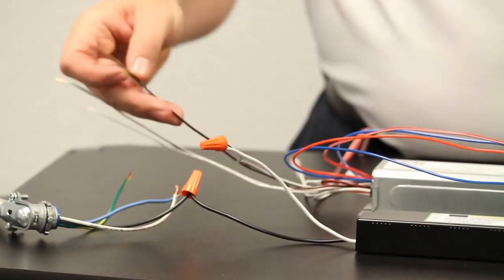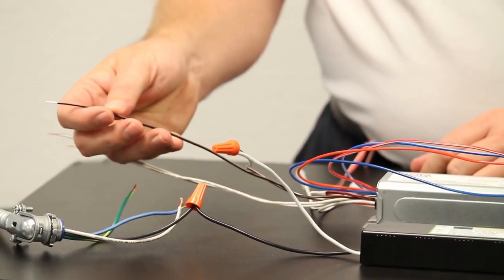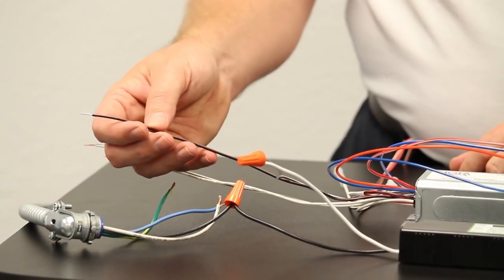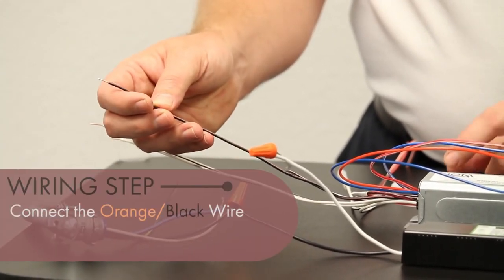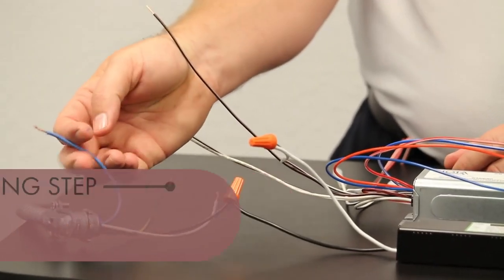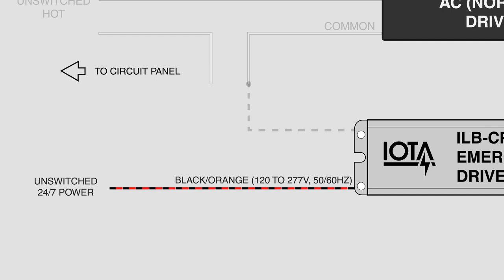Next, we are going to connect the power wire, which is a black-orange wire, or some may see it as black-brown. This connection will get made to an incoming unswitched line that comes directly from the electrical panel. There is no light switch on this, and the power is constant all the time.